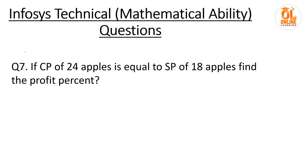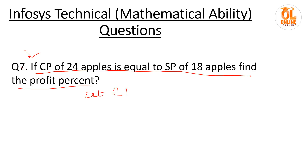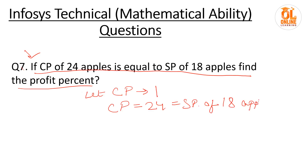Next is a very common question: if the cost price of 24 apples equals the selling price of 18 apples, find the profit percent. The trick is to let the CP of one apple be 1. Then CP of 24 apples = 24, which equals SP of 18 apples. Therefore CP of 18 apples = 18.